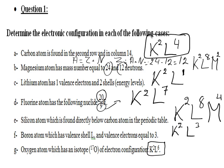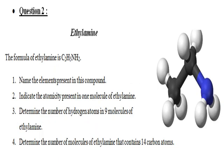Isotopes have the same atomic number, so they have the same electron configuration K2 L6. This does not differ for isotopes.